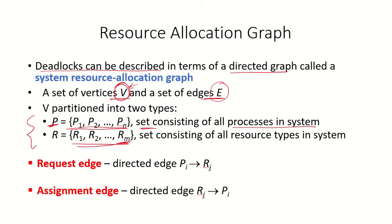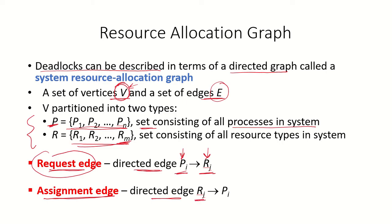In the edges set we have two different types of edges. One is the request edge — a directed edge from process Pi to resource Rj when process Pi is requesting for resource Rj. The other kind is the assignment edge, also a directed edge, corresponding to a resource already assigned to a process Pi. The request edge is when a process is requesting for a resource; the assignment edge is when the resource is already assigned to a process.